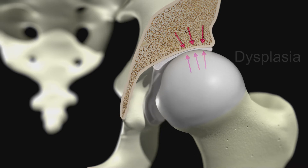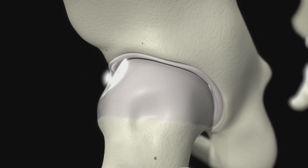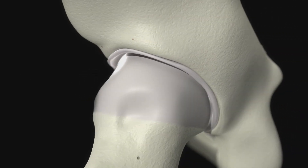Acetabular dysplasia is a condition that affects the size and orientation of the hip socket. In the most common form of hip dysplasia, the acetabulum is small and does not adequately cover and therefore stabilize the head of the femur. When the ball is inadequately covered by the acetabulum, the joint is mechanically overloaded.